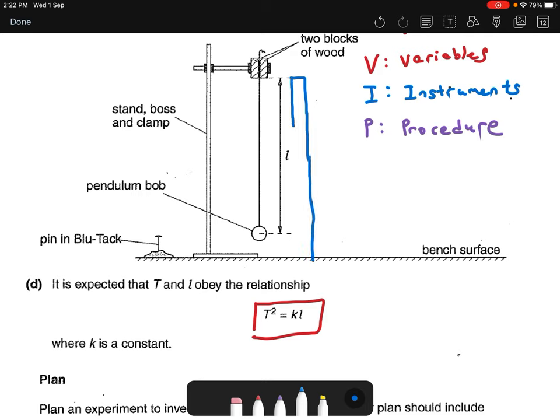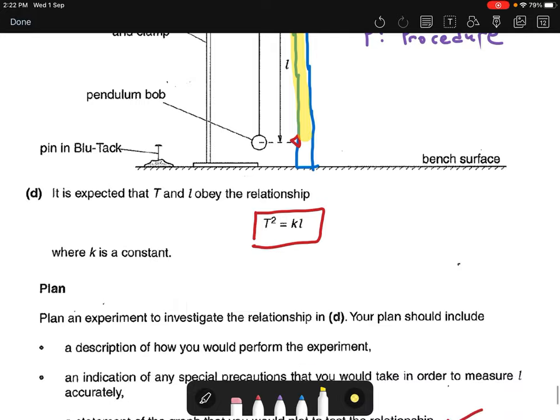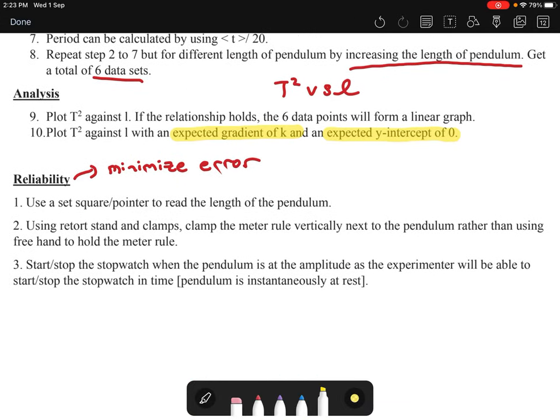When I want to measure l as accurately as possible, I must ensure that the meter rule beside this length of the pendulum is vertical. So I must roughly say how do I ensure that this meter is vertical and to increase our reading accuracy? Maybe I can say I put a pointer here and a pointer here to determine what is the exact length or to minimize our parallax error. So this is some precaution we can put inside. Use a set square or pointer to read the length of the pendulum. Now after that, I can also say use a retort stand and clamp and clamp the meter rule vertically next to the pendulum rather than using free hand to hold the meter rule.